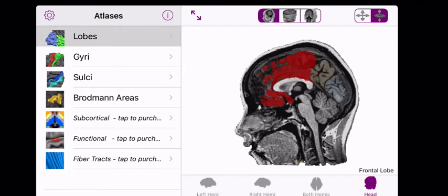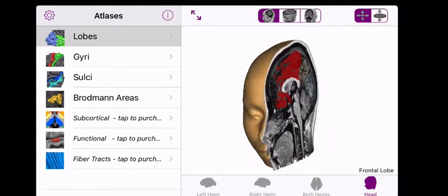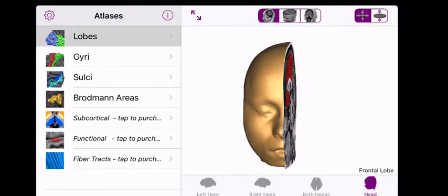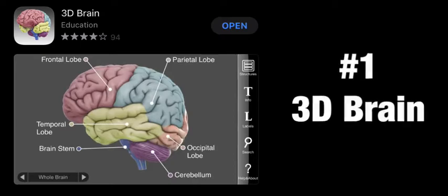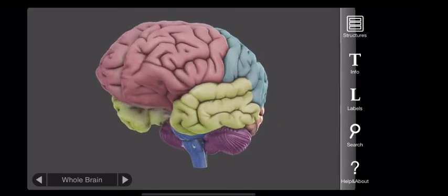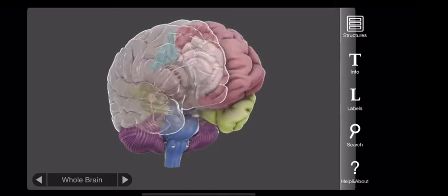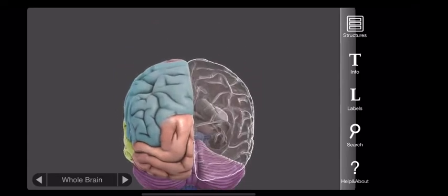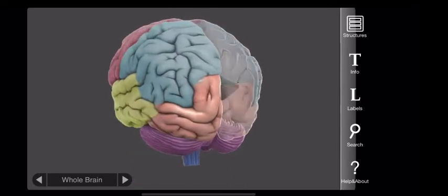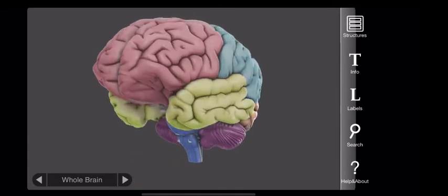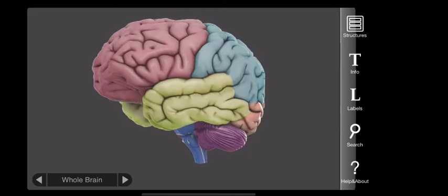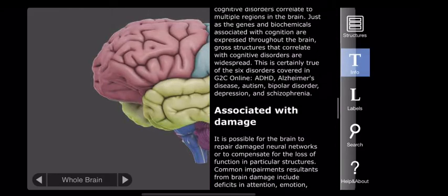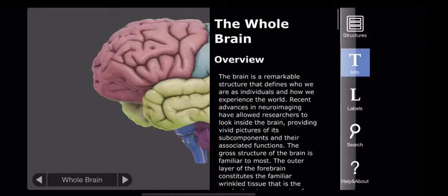Coming up, my number one brain anatomy app is called the 3D Brain, and this one has it all. It's got the 3D brain here that you can manipulate and move around very easily, and it's got colored parts so you can see the different lobes of the brain.